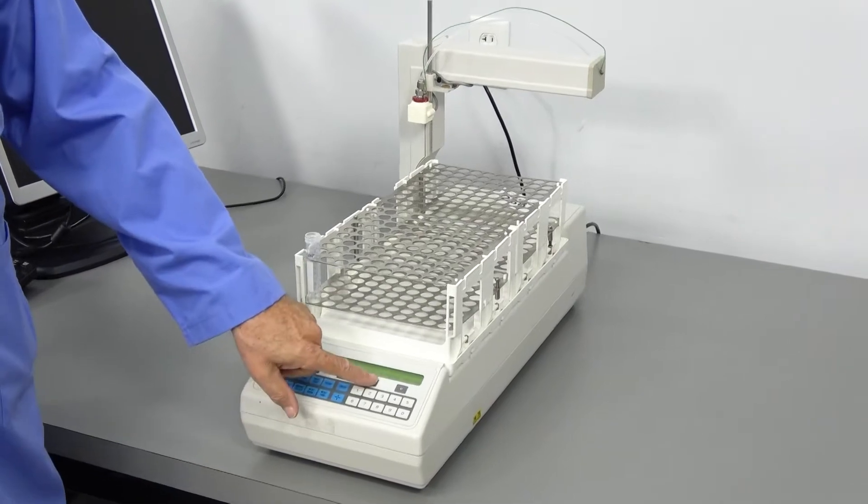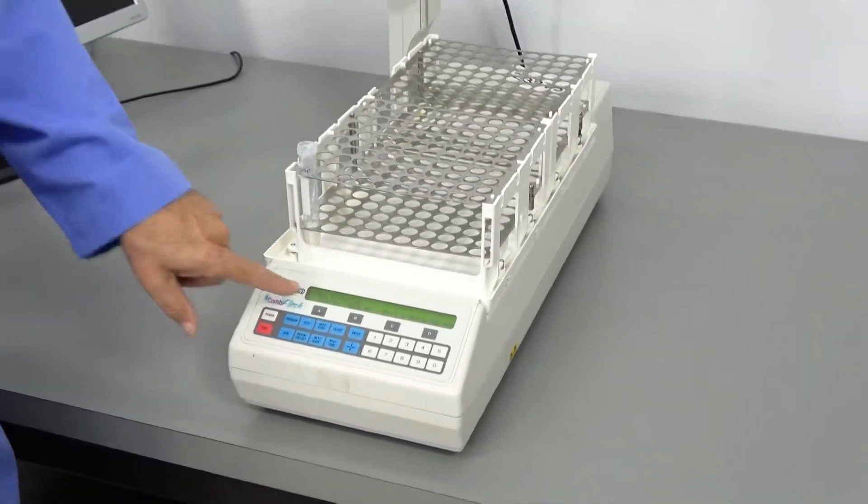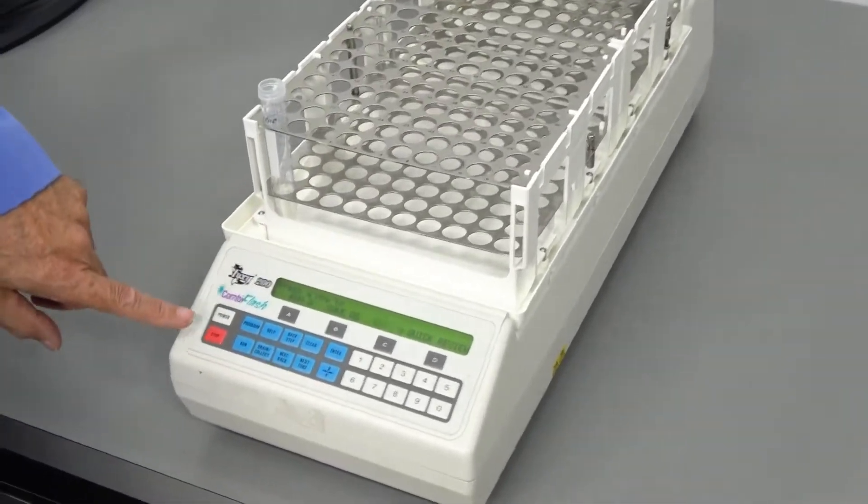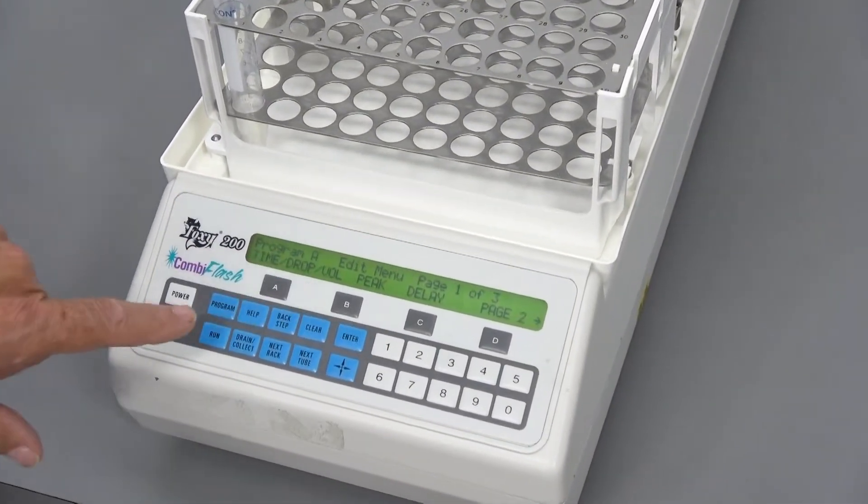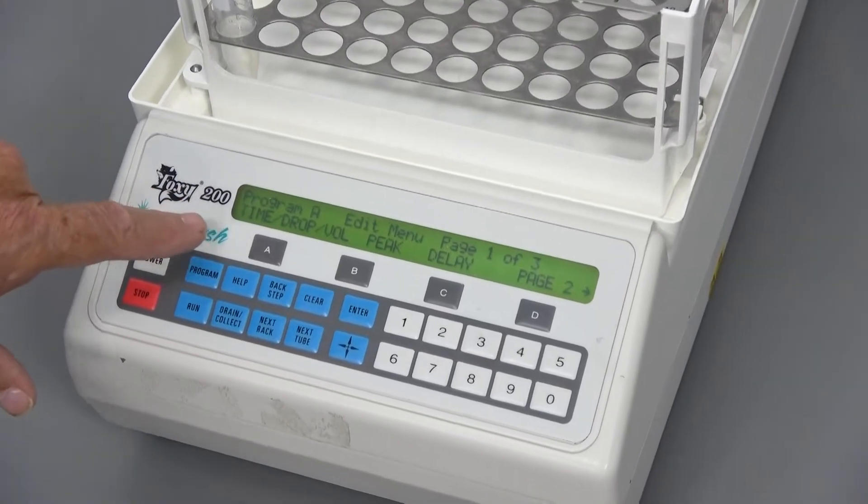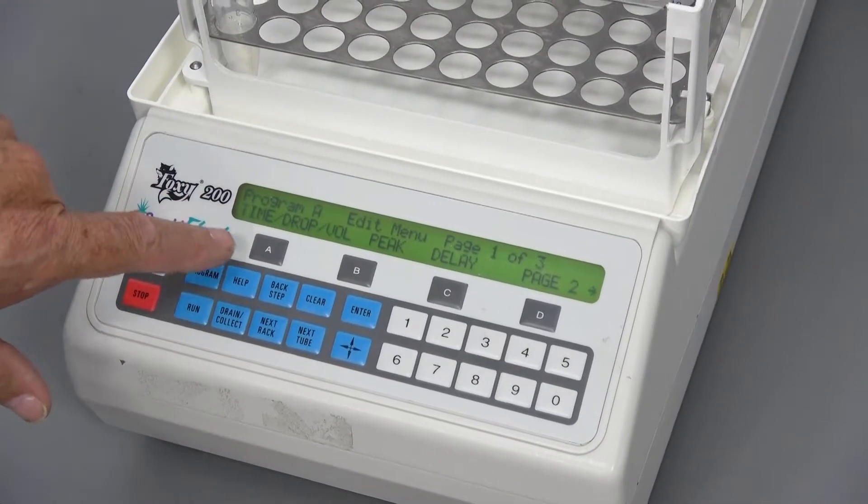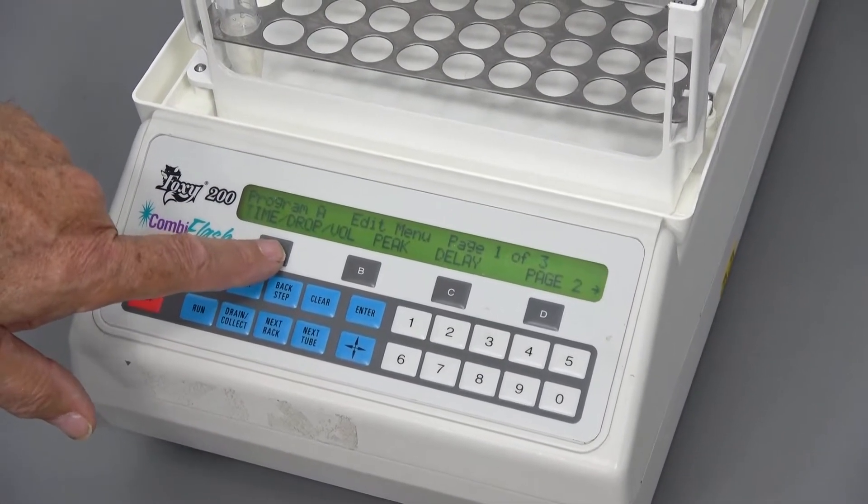In this case, we would just tell it that we want to edit the program that we have currently up on the screen. Select to edit. Here's where we tell it what we want to edit. This we're going to, the time drop or volume property.